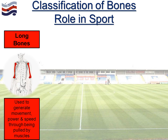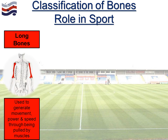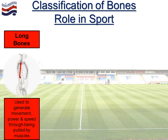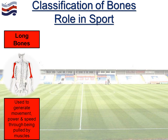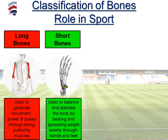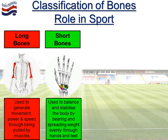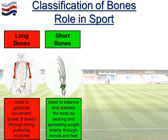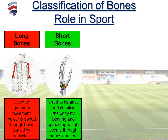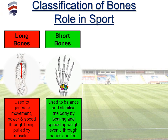Looking in a bit more detail — long bones are here to generate movement, power and speed, and they do that by being pulled by muscles that are attached to those specific bones. Short bones, so the carpals and the tarsals, are used to balance and stabilise the body by bearing and spreading weight evenly through the hands and feet.